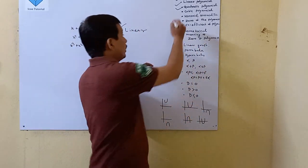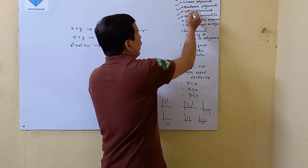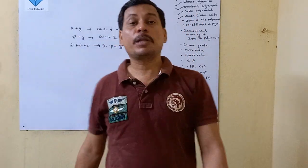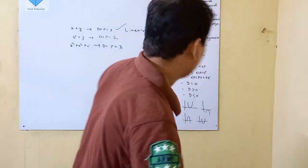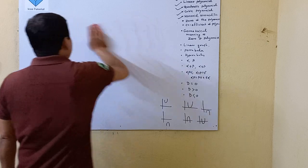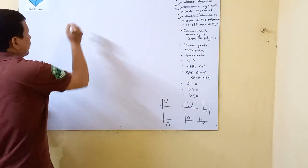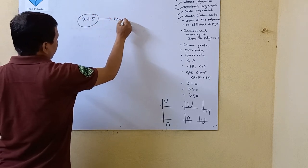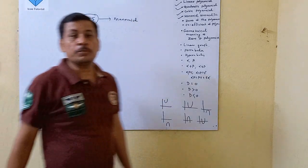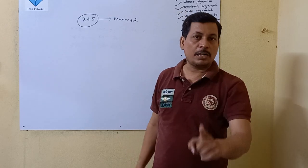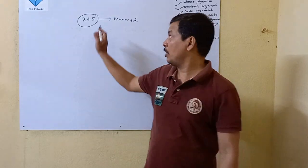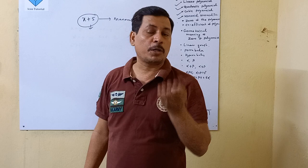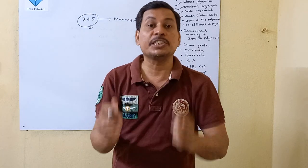Now our point is linear polynomial — last class also discussed. Now we will discuss the zero of the polynomial. What is zero of the polynomial? It is a very very important point. Suppose x plus 2 — this is a monomial. The higher degree is 1, the maximum power is 1, the degree of polynomial is also 1. The question is: what is the zero of the polynomial? Zero of the polynomial means for what value of x this polynomial will be 0.